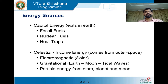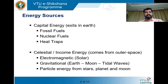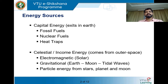The other category of energy source is celestial or income energy — the energy that comes from outer space to the Earth. An example is solar radiation: the sun emits radiation on Earth from outer space, which we call electromagnetic radiation or photons. Similarly, gravitational attraction between the Earth and Moon results in tidal waves in the sea — that is also energy coming from outer space. Apart from that, certain stars, planets, and the Moon emit particle energy from outer space. So celestial or income energy is nothing but energy that comes from outer space.